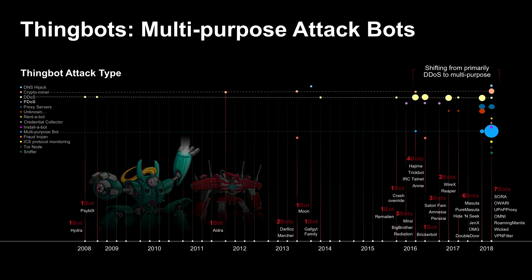DDoS attacks are not the only thing thingbots are doing. In the last three to six months, we've seen a big shift toward multipurpose attack bots for hire — not only offering DDoS tools but also proxy servers, Tor nodes, crypto mining, credential collection at scale, and credential stuffing. These are literally multipurpose attack bots for hire. With 9 billion things out there, many of them insecure and easy to infect, any DDoS controls you have in place must be able to scale and have proactive bot defense. There are simply too many things out there that are too easy to compromise — this attack vector is massive.